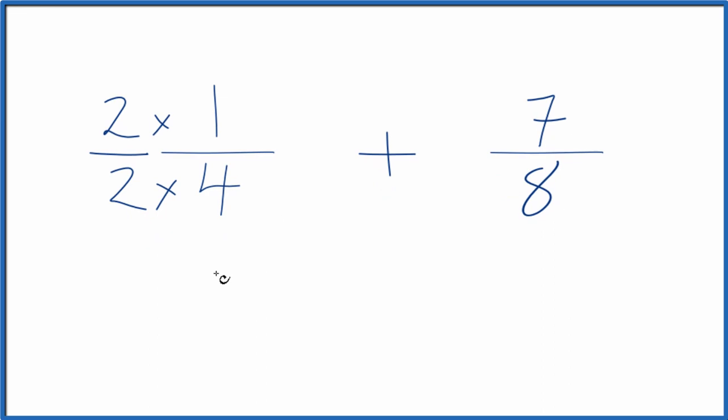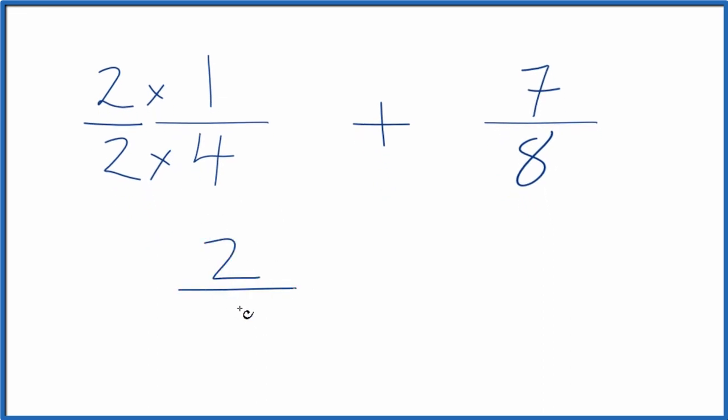Now, 2 times 1 is 2, 2 times 4 is 8. We already have 8 here as our denominator, so we'll just write 7 eighths. And we can just add these fractions together.